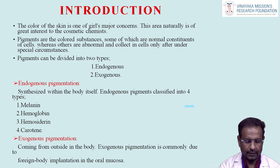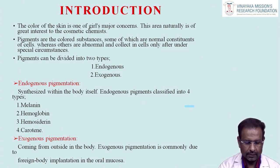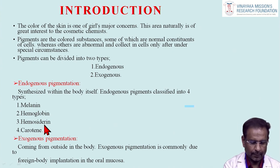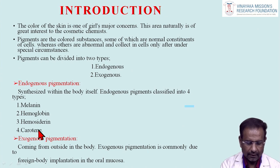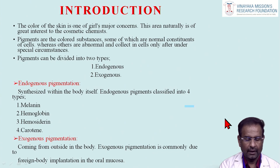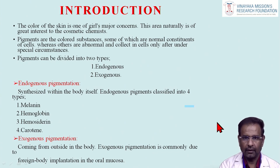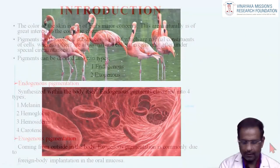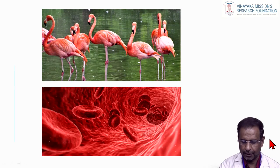Endogenous pigmentation is synthesized within the body — it is a normal physiological process. Endogenous pigmentation is divided into four types: melanin, hemoglobin, hemosiderin, and carotin. Exogenous pigmentation comes from outside the body and is commonly due to foreign body implanted into the oral mucosa. It is very common in day-to-day dental practice.